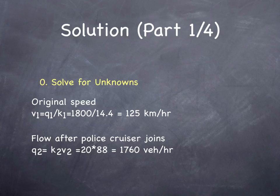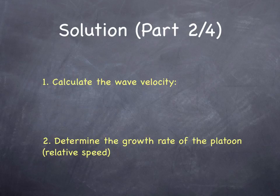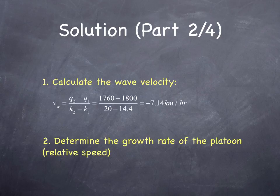Solve for the flow after the police cruiser joins. Q2 is the unknown. V2 is 88 kilometers per hour. K2 is 20 vehicles per kilometer. That gives us 1,760 vehicles per hour. What's the wave velocity? Vw is delta Q over delta K. So delta Q is a 40 vehicle per hour drop. Delta K is a 5.6 increase in vehicles per kilometer. So negative 40 over 5.6 is negative 7.14 kilometers per hour. The wave is moving backwards.